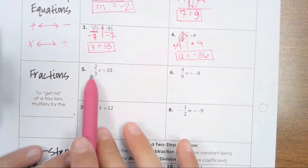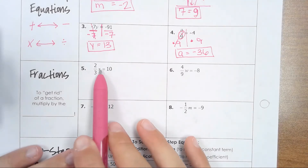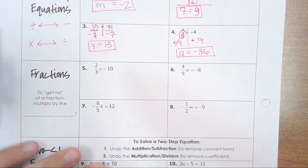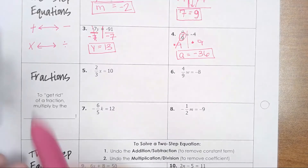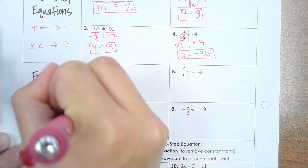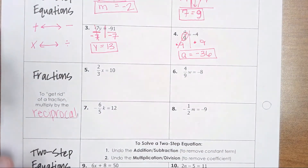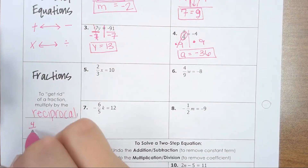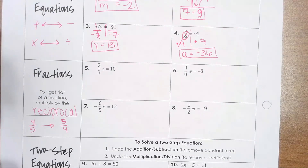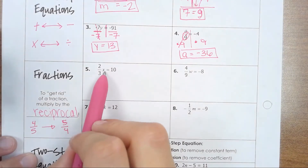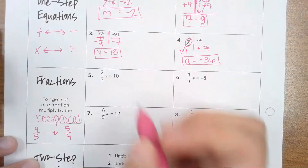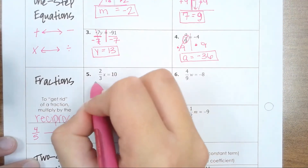What if we have fractional coefficients? We're still trying to get our variable by itself, but now instead of just a number we need to get rid of, we have a fraction. To get rid of a fraction, you multiply by its reciprocal. If you have four-fifths, the reciprocal is five over four — you just flip the numbers. Here we're trying to get x by itself, so we need to get rid of the two-thirds. To get rid of a fraction, multiply by its reciprocal, which is three over two.